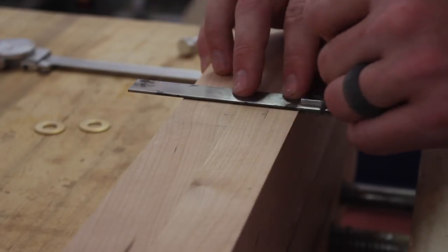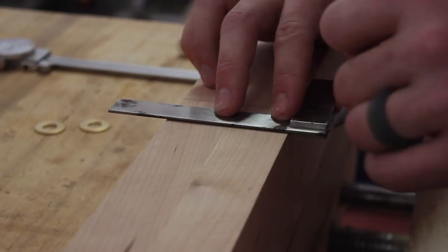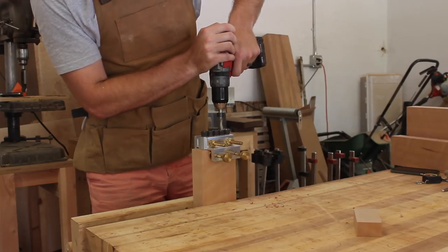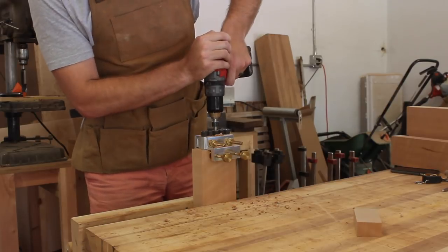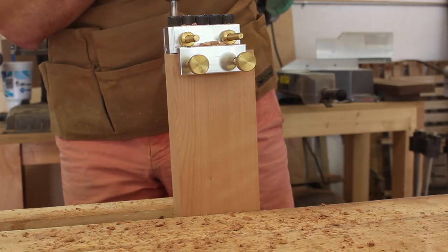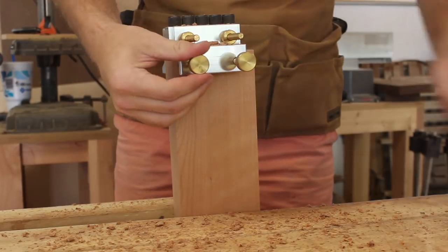I'm getting some lines marked out here for the dowel joinery, and these are just going to make sure that the spacing between the vertical supports are even. These pieces can fit 5 dowels in them, but because I'm going to be adding some tapers later on, the top ends, which will be less wide, will only be able to fit 4 dowels.